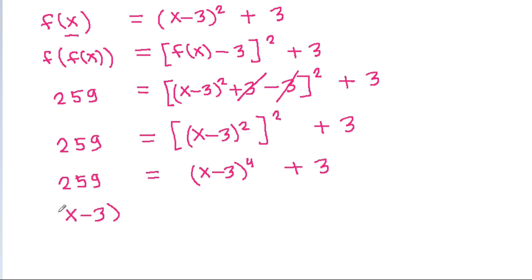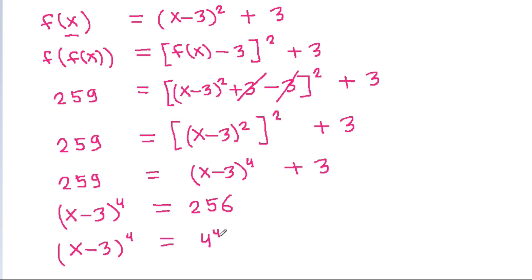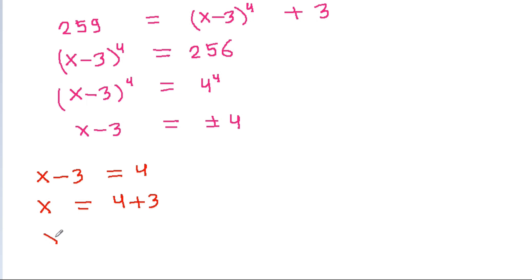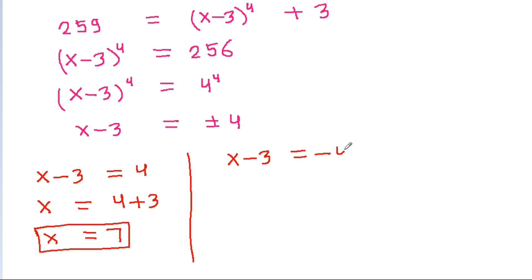We get (x minus 3) squared, raised to the power 2, minus 3. So x minus 3 to the power 4 is equal to 259 minus 3, which is 256. So x minus 3 to the power 4 equals 256. Therefore x minus 3 equals 4, meaning x equals 4 plus 3, so x equals 7. Or x minus 3 equals minus 4, so x equals minus 4 plus 3, and x equals minus 1.